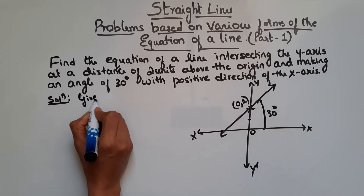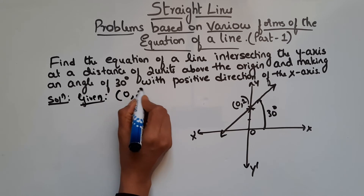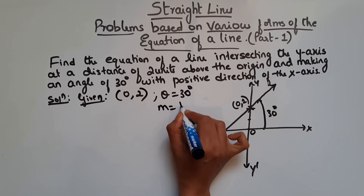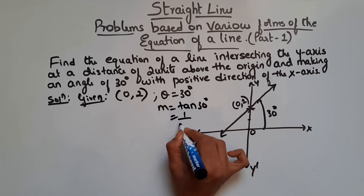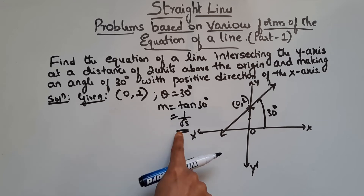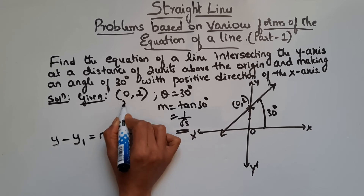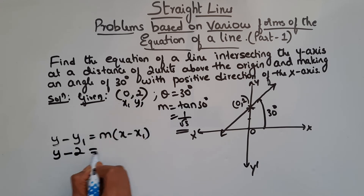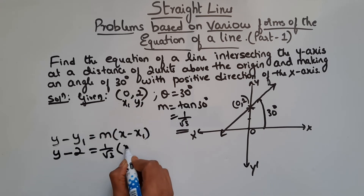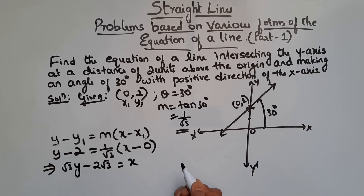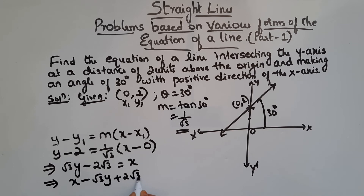So we have point (0, 2) and theta = 30°. Slope m = tan(30°) = 1/√3. Using point-slope form: y - 2 = (1/√3)(x - 0). Multiplying through by √3: √3(y - 2) = x, so √3y - 2√3 = x. Rearranging: x - √3y + 2√3 = 0. This is the equation of the line.